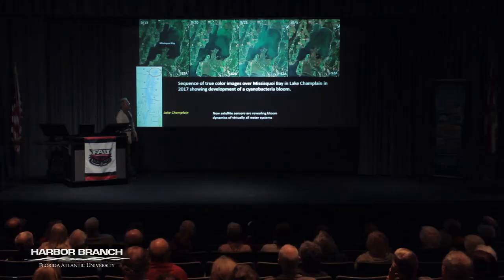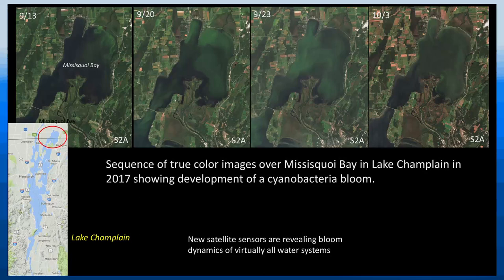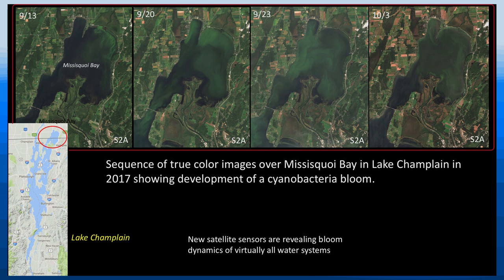This is from Lake Champlain in Vermont — I'm showing what you can see now that was not observable a few years ago. They have cyanobacteria blooms up in Lake Champlain, and this is a sequence of true color RGB images showing a cyanobacteria bloom in one of the corners of the lake. You can see the spatial evolution of this cyanobacteria bloom. This is the kind of power we can now get from these new remote sensing sensors, and we can do the same thing for Lake Okeechobee and the Indian River Lagoon.